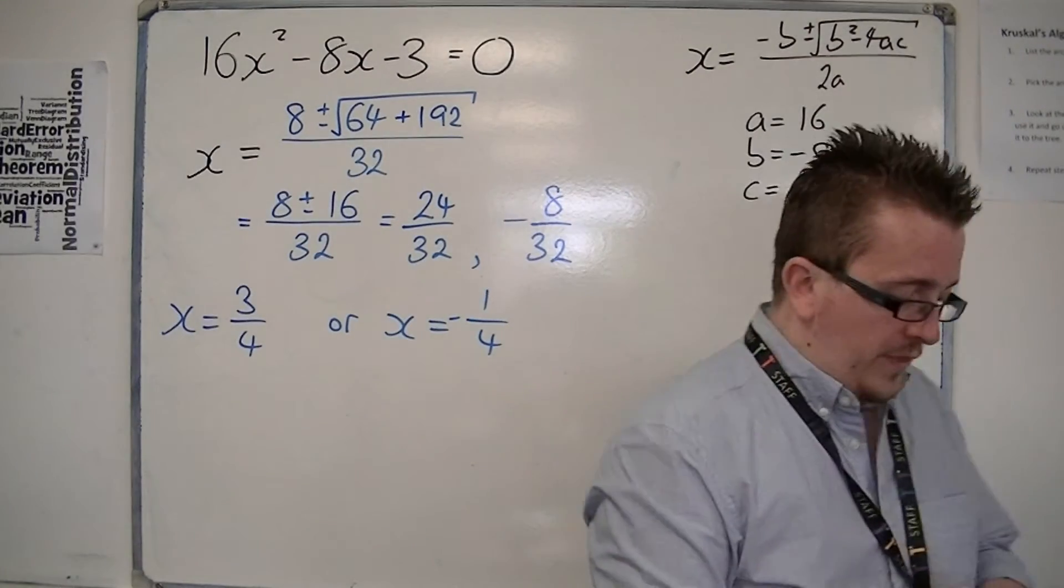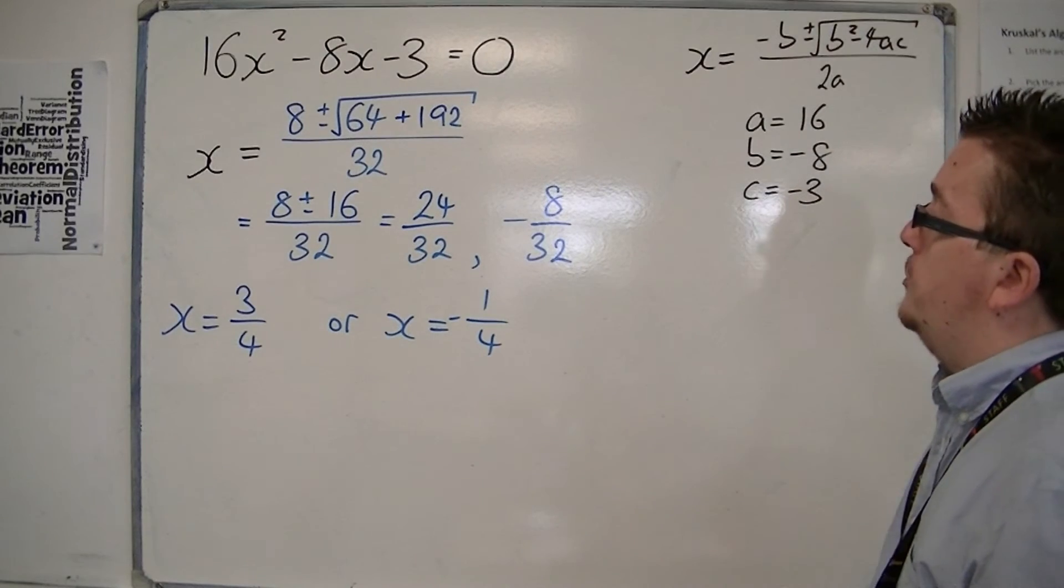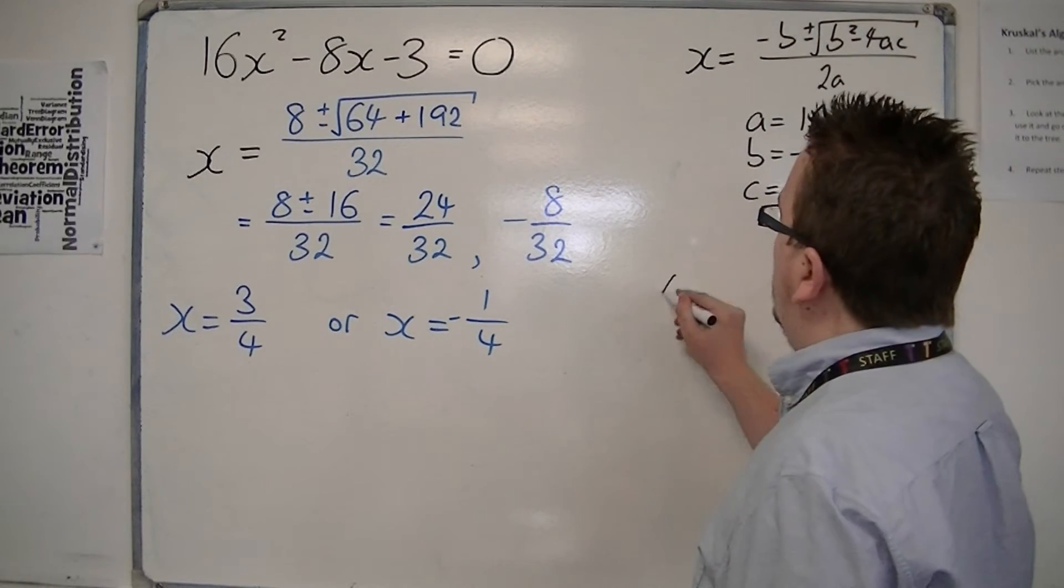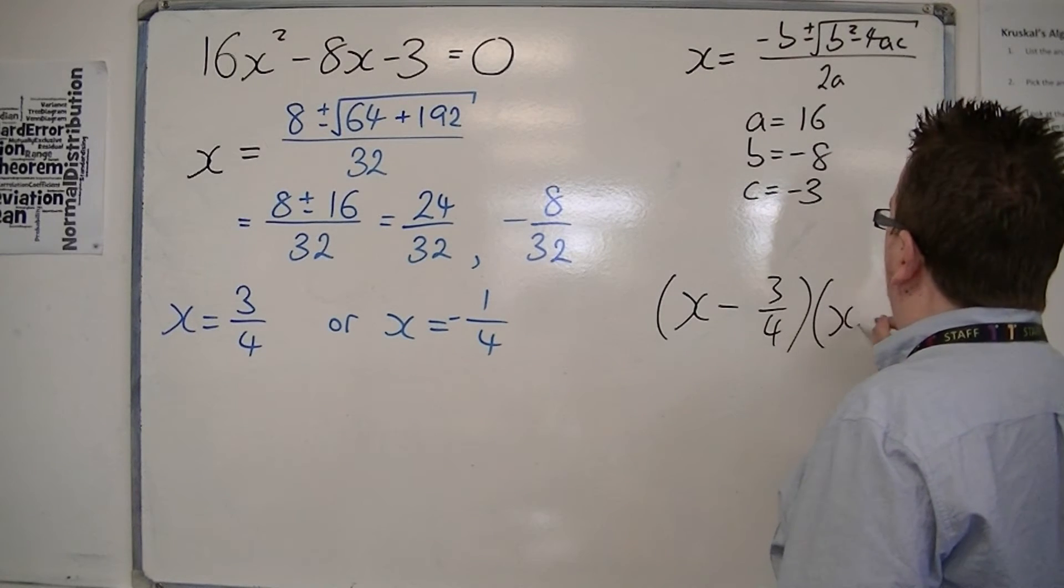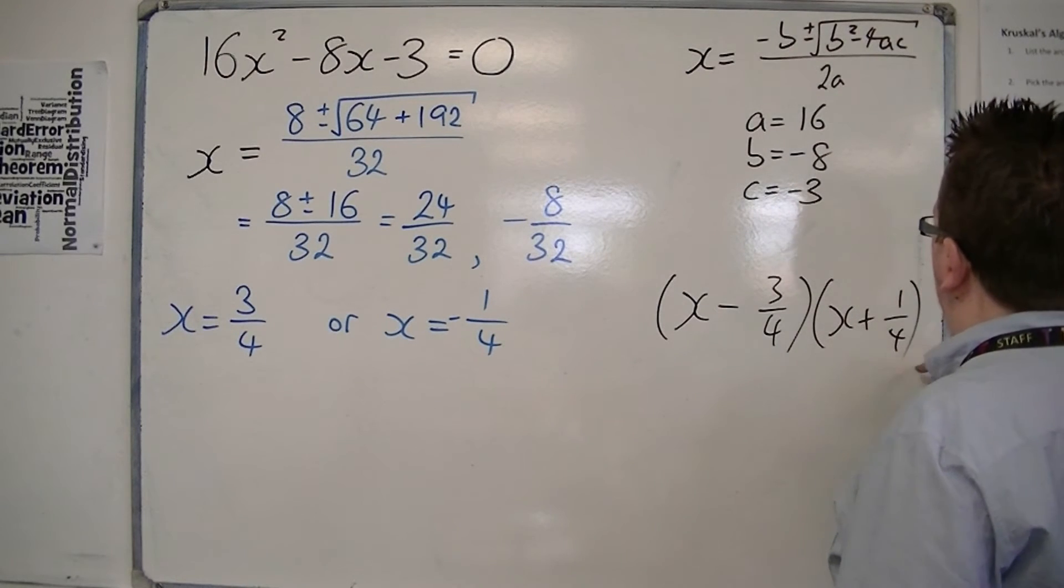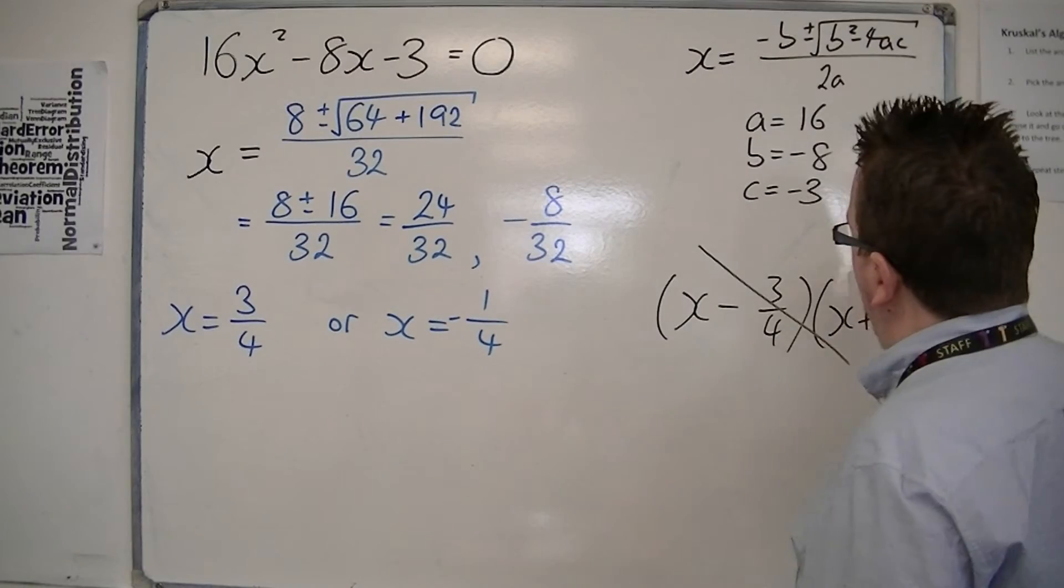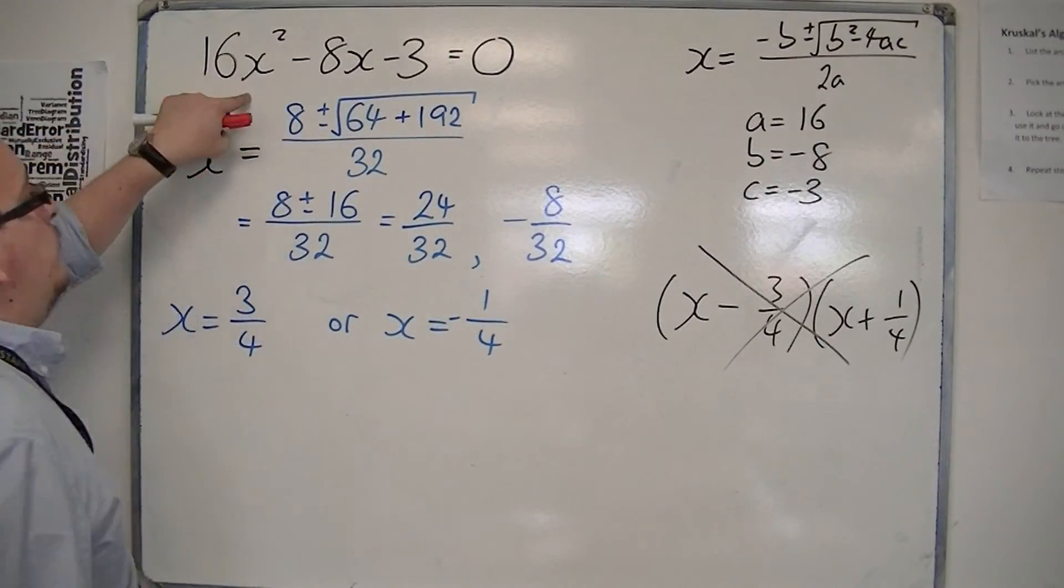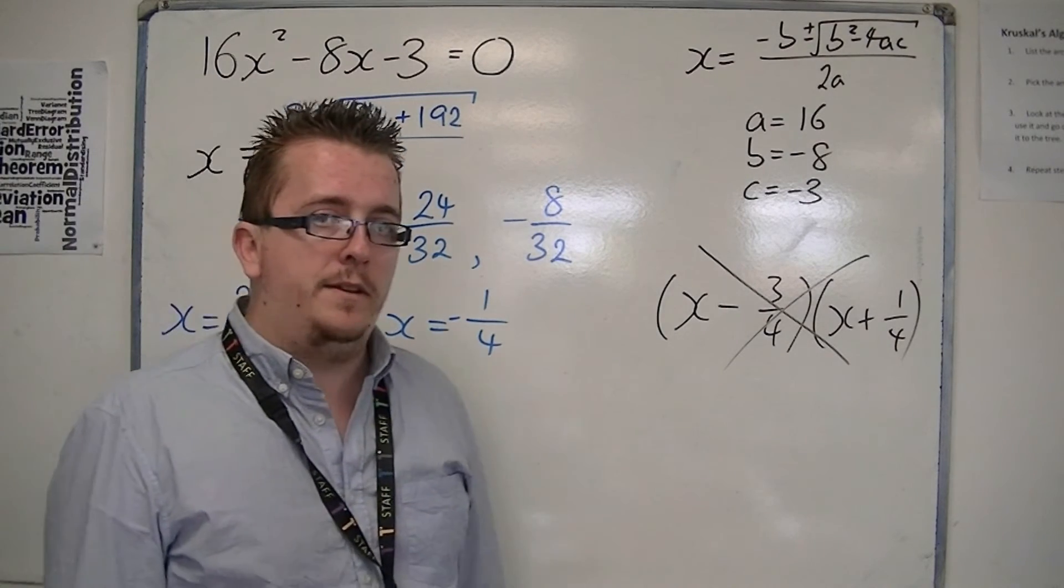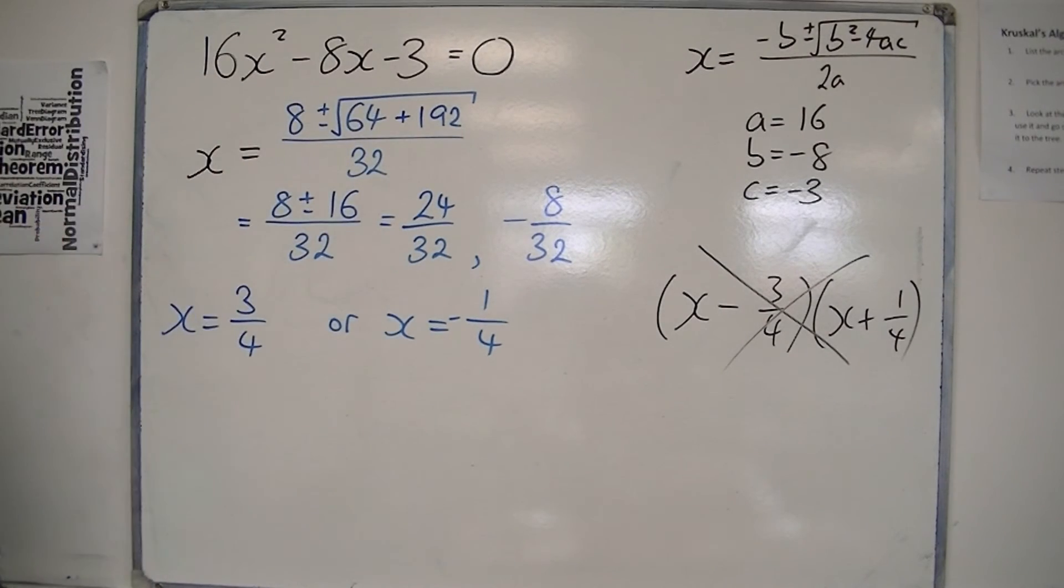Now, one thing that you mustn't do at this stage is to go, oh well, then factorised, we would have x minus 3 quarters, and x plus 1 quarter. This is wrong. It's wrong, because x times x will make x squared, which isn't 16x squared. Something has gone wrong.